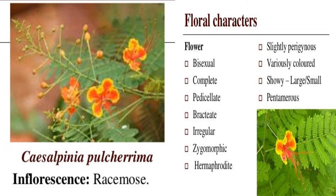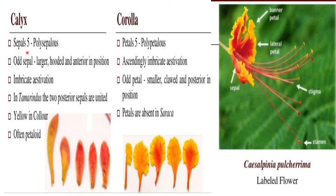Flowers are usually pentamerous. Calyx: sepals 5, polysepalous. The odd sepal is large, hooded, and anterior in position — as you can see here, it is large, hooded, and anterior. Imbricate aestivation. In the case of Tamarindus, the two posterior sepals are united, yellow in color, and often petaloid.